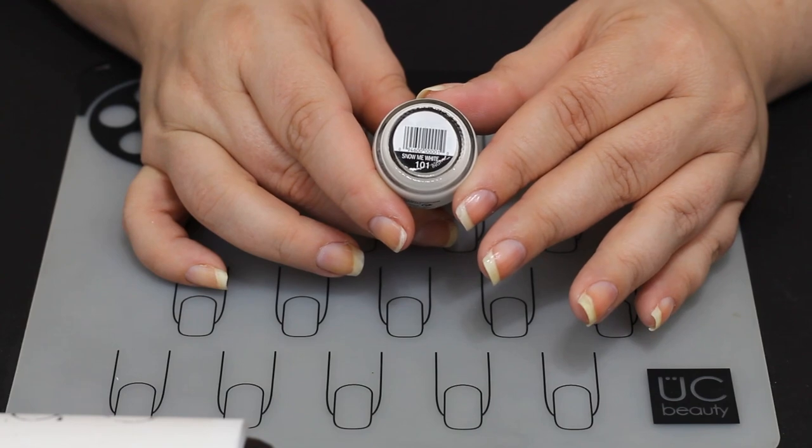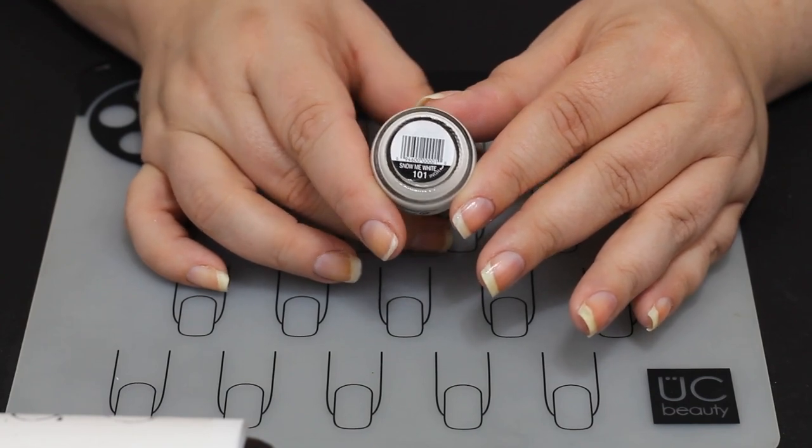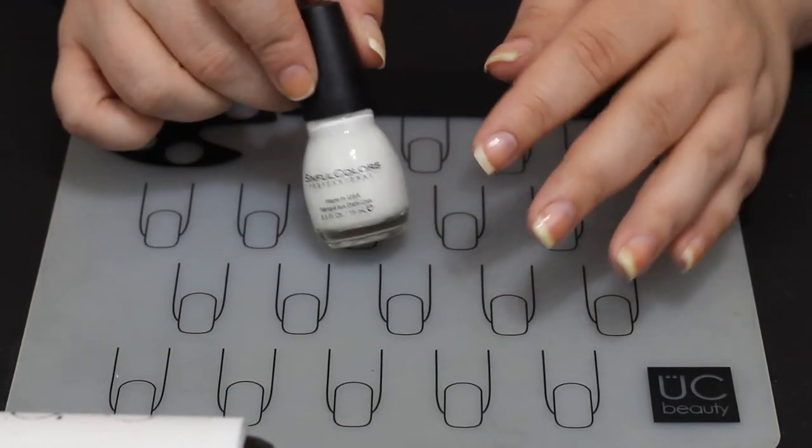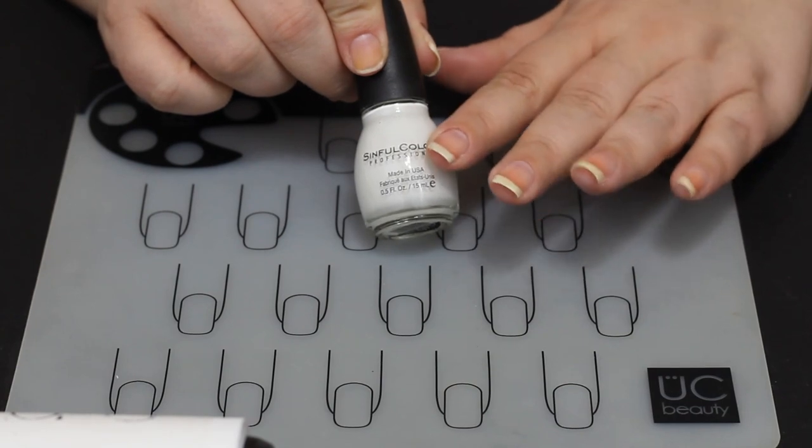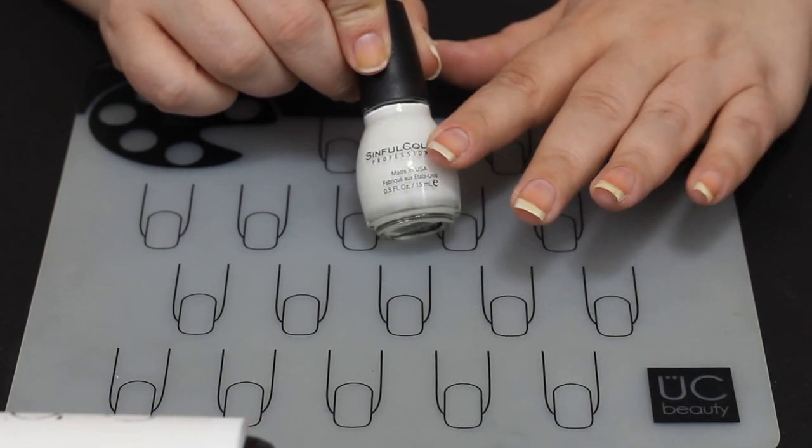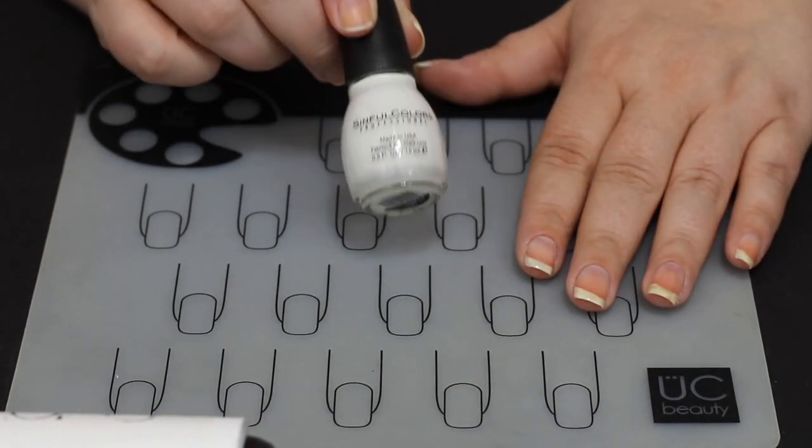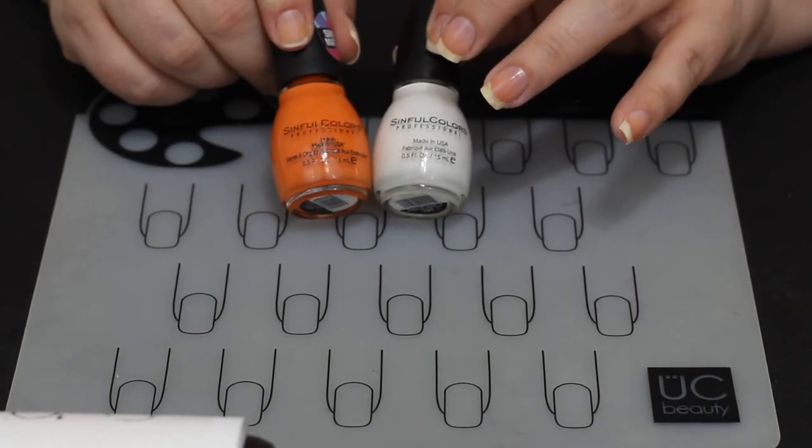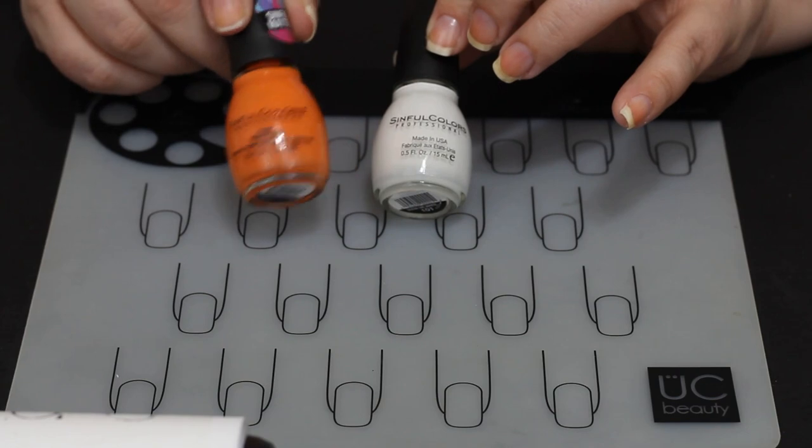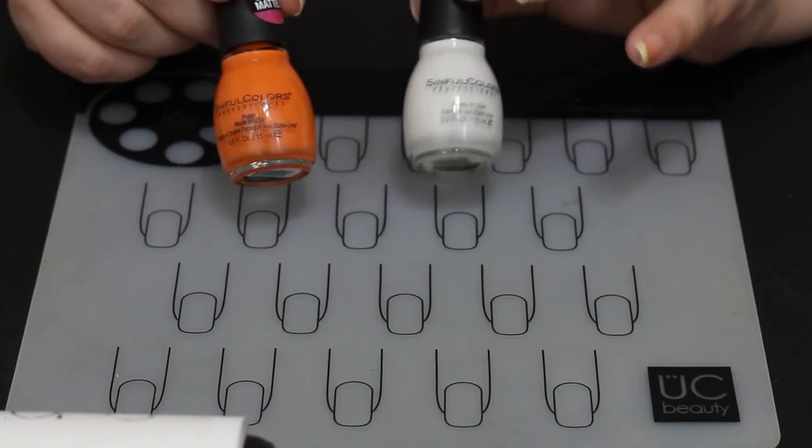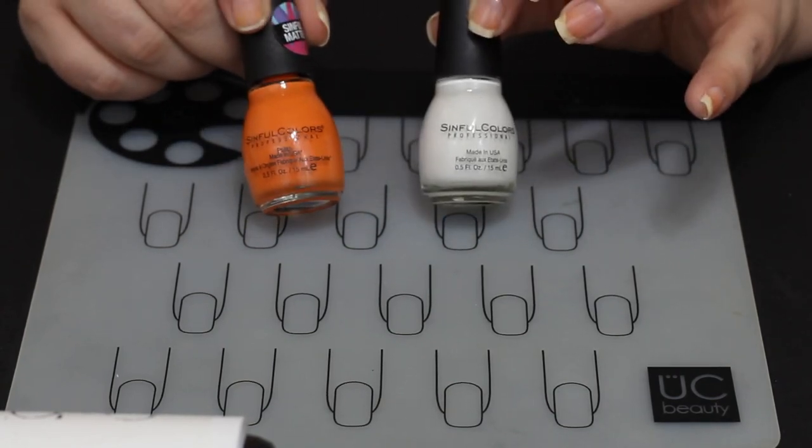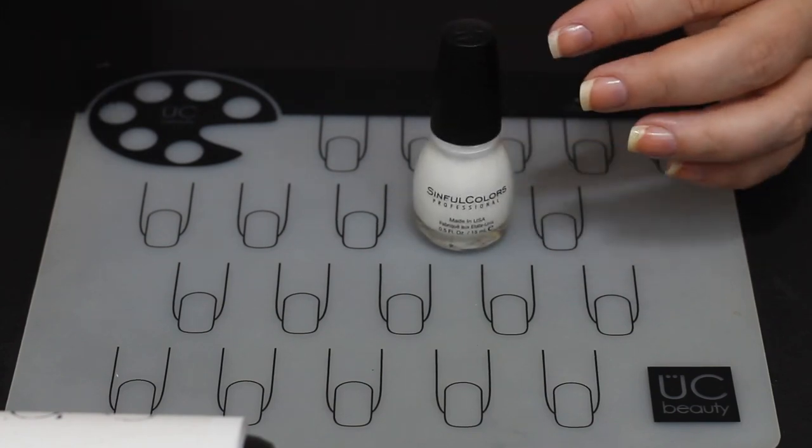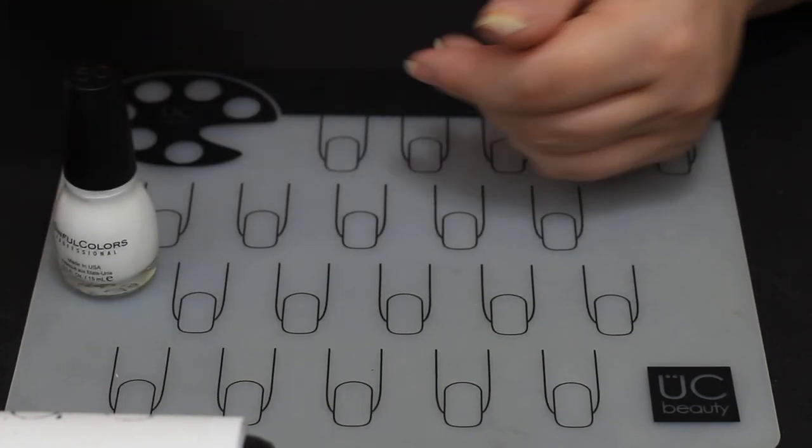Now what we're going to do next is use Sinful Colors Snow Me White. What that will do, if you have a very pale color, something that's transparent or a neon, if you put white on the bottom it will make the color on top of it pop. So even though that is a pretty bright orange, it pops so much better if you put that white underneath it.